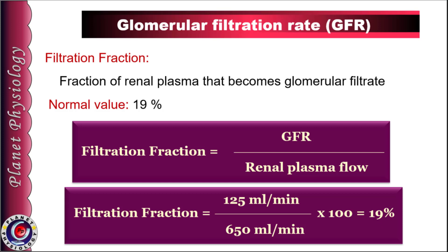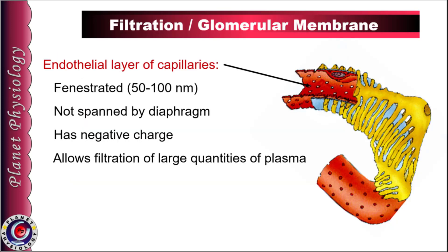Let us study the structure and features of the filtration membrane, also known as the glomerular membrane or filtration barrier. The first layer is the glomerular capillary endothelium. As shown in this diagram, it is highly fenestrated with a pore size of 50–100 nm. Unlike other fenestrated capillaries, these pores are not spanned by a diaphragm. Endothelial cells also possess negative charges, so even though pores are large enough to allow filtration of plasma proteins like albumin, the negative charge repels them and prevents their filtration.